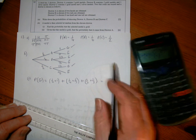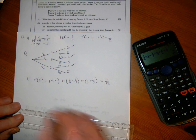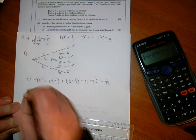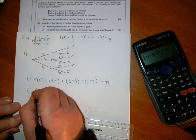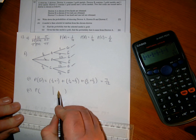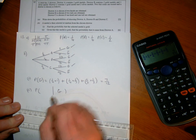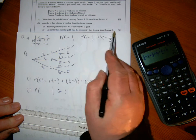Part two: given that it's gold, so here I've got a conditional probability. I'm given - so the line goes down, what I'm given goes after the line, and given it's gold, the property I want to find goes to the left of the line. I want to know the probability it came from drawer A.